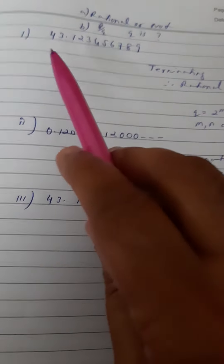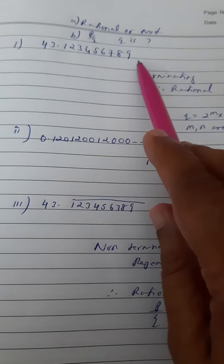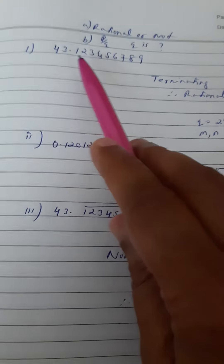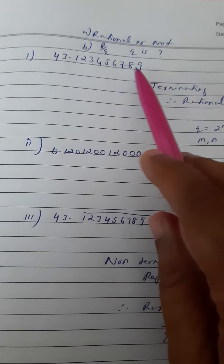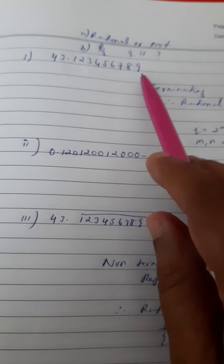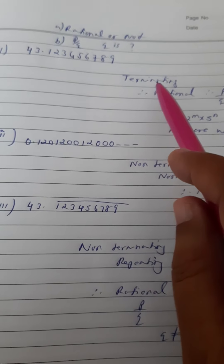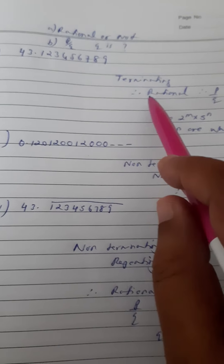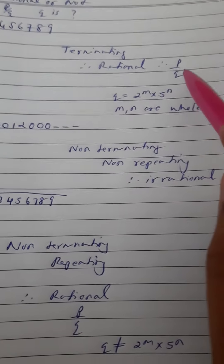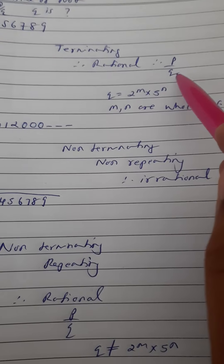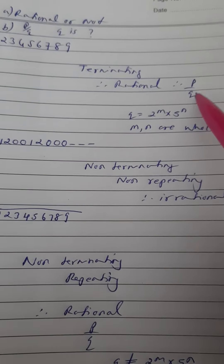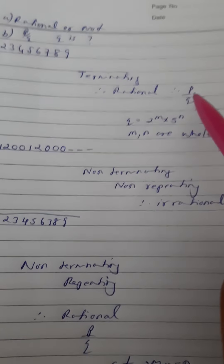For the first part, 43.123456789 — the number is terminating. Although there are a lot of digits, it does not extend beyond that; it has terminated after nine decimal places. So it's a terminating number, and all terminating numbers are rational. Therefore it is a rational number and will be in the form of p by q.